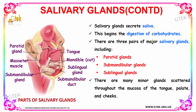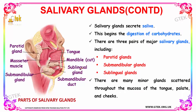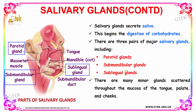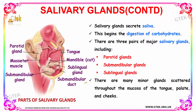Your salivary glands secrete the enzyme saliva, and this is the part that initiates the digestion of your carbohydrates. There are three major portions of your salivary glands: the parotid gland, the submandibular gland, and the sublingual gland. The minor portions are scattered throughout the mucosa of the tongue, palate, and cheeks. These help in the secretion of saliva, initiating the digestion process which is further carried on as the food moves down.